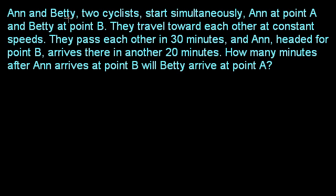So this one says, Ann and Betty, two cyclists, start simultaneously. Ann at point A and Betty at point B. They travel toward each other at constant speeds. Let's say that Ann is traveling with velocity VA, and Betty is traveling with velocity VB.